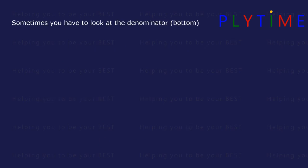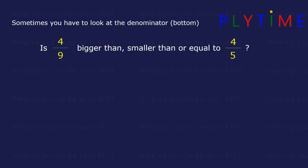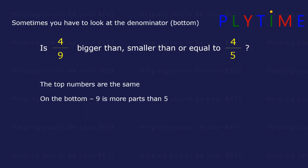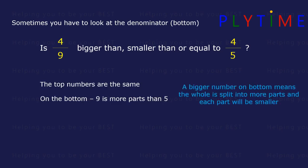Sometimes you have to look at the denominator on the bottom. Is four ninths bigger than, smaller than, or equal to four fifths? The top numbers are the same. On the bottom, nine is more parts than five. The bigger number on the bottom means the whole is split into more parts, so each part will be smaller. So four ninths is smaller than four fifths.